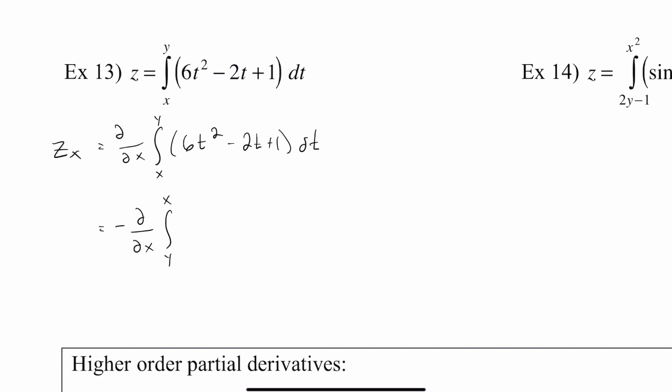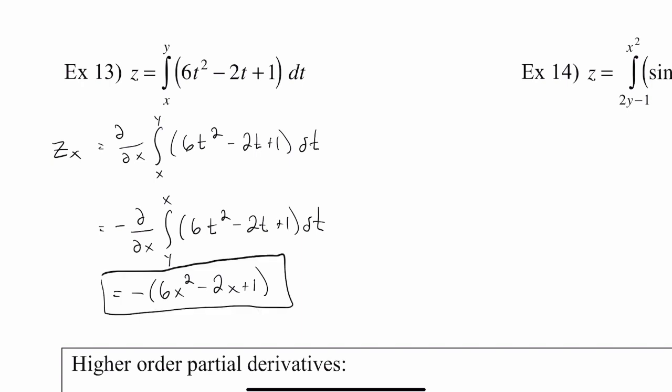So I'll put the y on the bottom and the x on the top. Now that we have a constant on the bottom of the integral — in this case we're treating y as a constant — and our variable x is up top, we can use the second fundamental theorem of calculus and just replace all the t's with that x that's on top of the integral. That gives us negative 6x squared minus 2x plus 1.